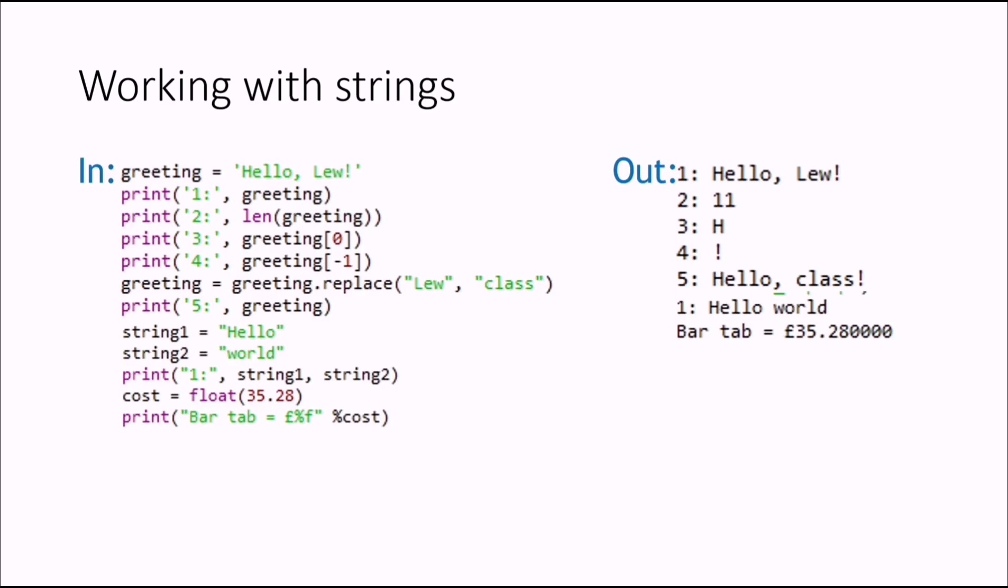Next, working with strings in Python. Anything in quotation marks will be marked as a string, whether it's a number, float value, or anything else. Here we're getting its index value—which alphabet is at that index. The index starts with zero. We have minus one, which prints the last character of the string. You can also replace a word in a string by using the replace statement.